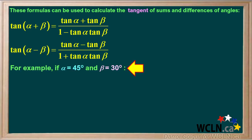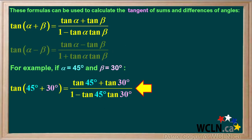For example, if alpha equals 45 degrees and beta equals 30 degrees, the tangent of 45 degrees plus 30 degrees equals tan 45 plus tan 30, divided by 1 minus tan 45 tan 30.